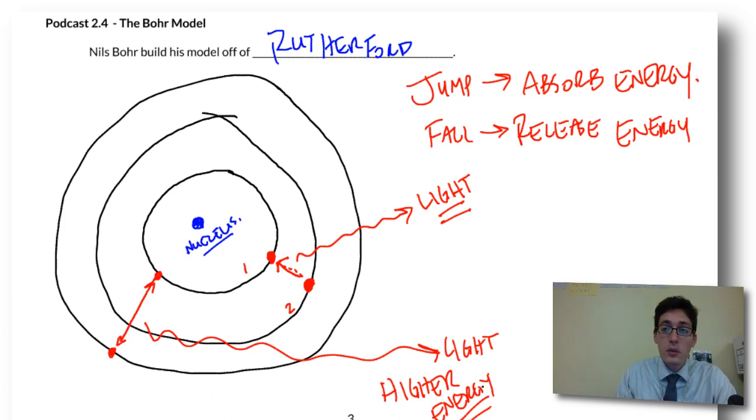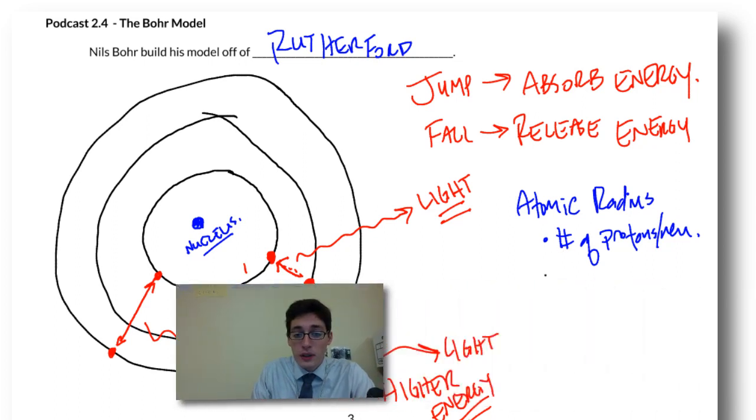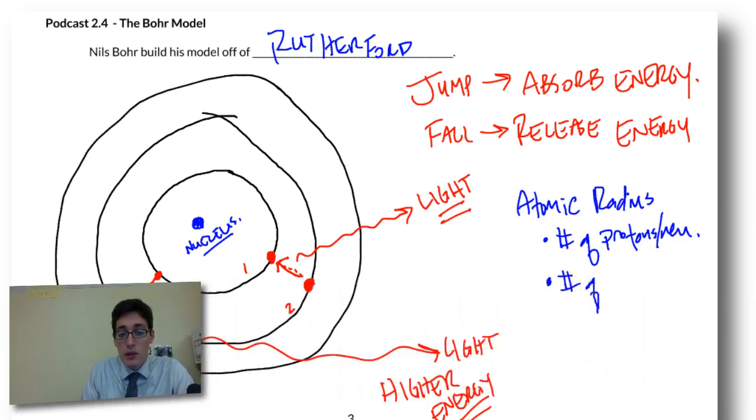What this led to is being able to develop a way to keep track of these electrons and where they are in the atom. Because there's rules about how many we can have. Your atomic radius, or the size of your atom, is based on a couple things. First, the number of protons and neutrons, because that determines the size of your nucleus. And it's also based on the number of electrons. The more electrons we have, the more energy shells we need, and the larger our atom becomes.